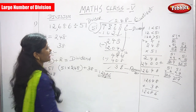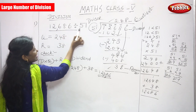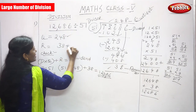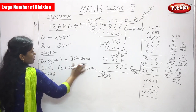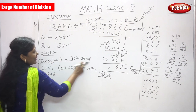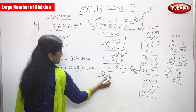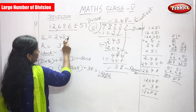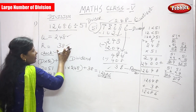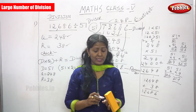To summarize: 12,686 divided by 51 gives quotient 248 and remainder 38. After applying the check method — divisor × quotient + remainder = dividend — we confirmed the answer is correct. Use this same method for all large number division problems to get the right and perfect answer. Thank you so much.